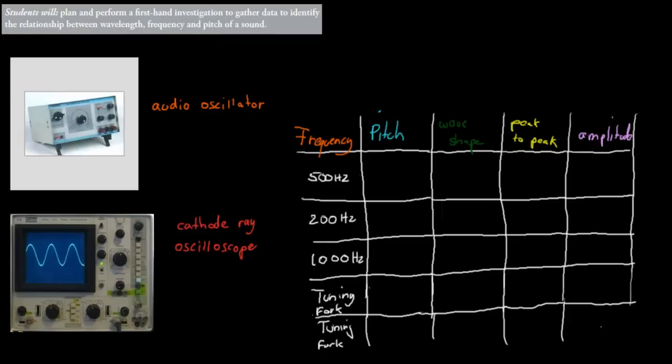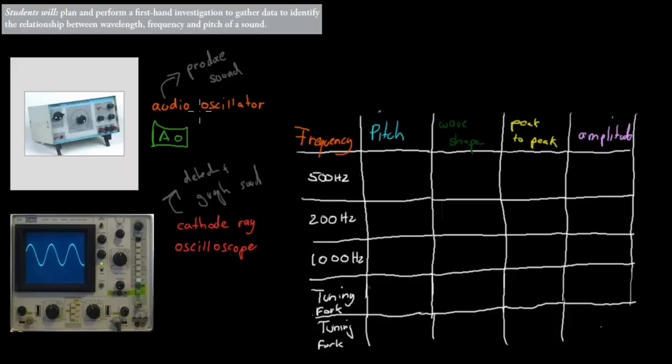In your experiment, you might have had an audio oscillator — an instrument used to actually produce electronically generated sound. The device on the bottom left is a cathode ray oscilloscope, used to detect and graph sound. You might have used both of these in a lab and plugged them together, connecting the audio oscillator via a cable to the cathode ray oscilloscope, abbreviated CRO.